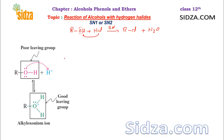The hydroxide group is a poor leaving group, so it's not easy to replace the OH from the alcohol. Therefore, first of all, the hydroxide undergoes protonation to form a better, good leaving group. You can see oxygen with a positive charge — it can leave with both electrons as water. This water can then be replaced by any nucleophile, so substitution is now possible. A nucleophile cannot directly replace the hydroxide, but it can easily replace the water molecule after protonation.